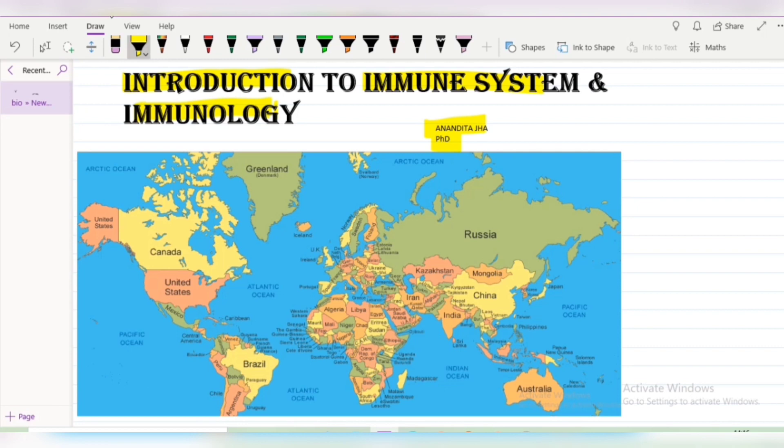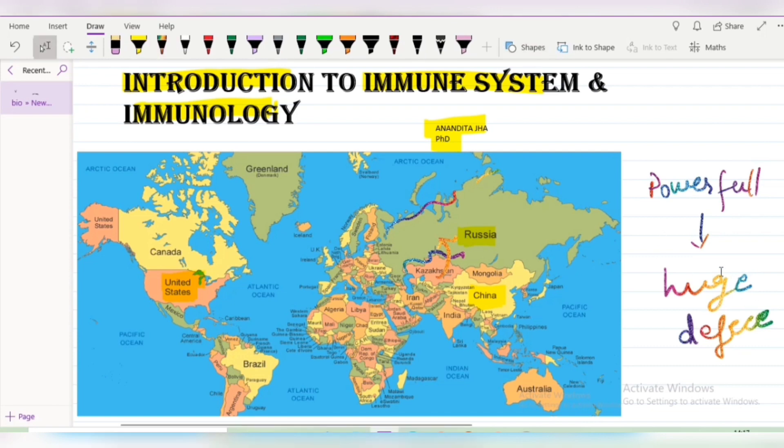See on your screen. Don't get afraid that you're in a geography class. It's an immunology class and you are at the right place. You can see many countries here. It's a map of the world actually. You see Russia here, USA, China. Why are these countries powerful? These countries are considered powerful because they have a huge defense system. Defense system means something which protects. These are the boundaries of the country, so another country's people could not enter and harm.